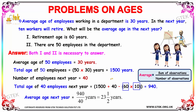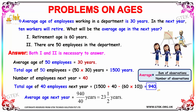The remaining 40 employees will each be 1 year older, so we add 40 × 1 = 40. Therefore, the total age next year = 1500 − 600 + 40 = 940. The average age next year is 940 / 40 = 23.5 years.